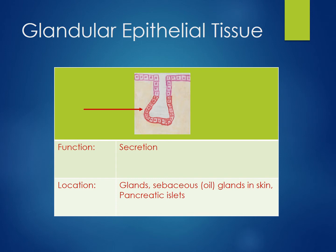Glandular epithelium functions to secrete. Glands may be classified as endocrine or exocrine. Endocrine glands secrete their products directly into the extracellular fluid or blood. Exocrine glands secrete their products into ducts that deliver their products to their destination. The picture shows a simple exocrine gland. The pink cells are part of the duct, and the red cells are glandular epithelium.